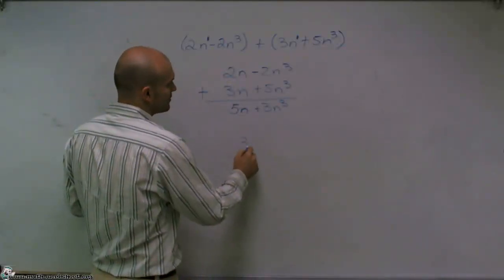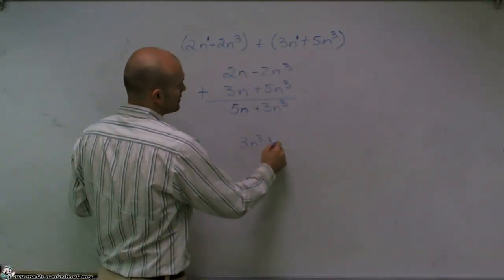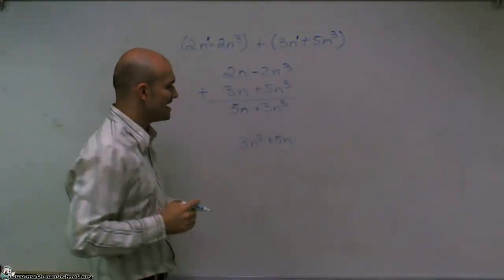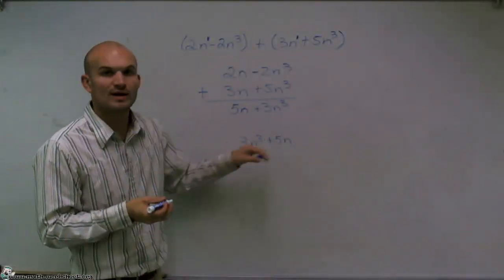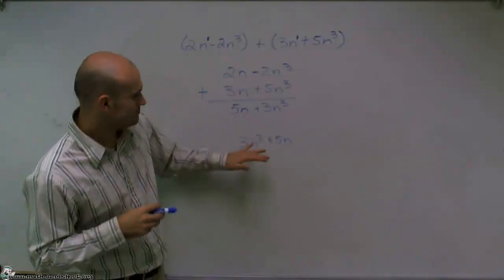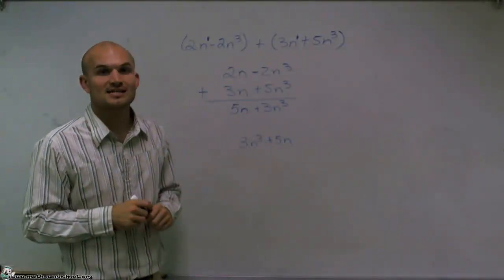So I'm going to write 3n cubed plus 5n. So it's just important, it's just helpful to write that first term with our highest exponent.